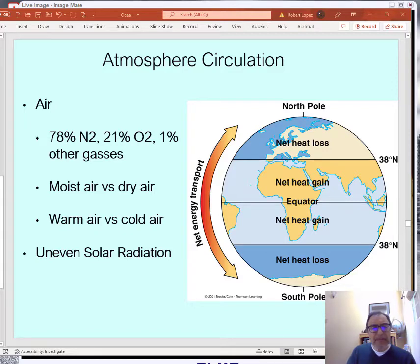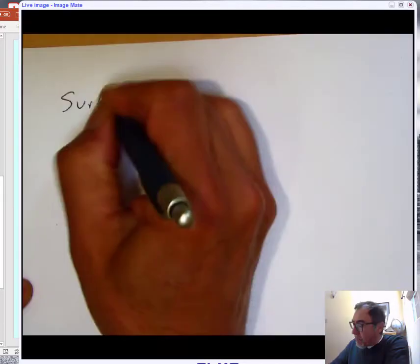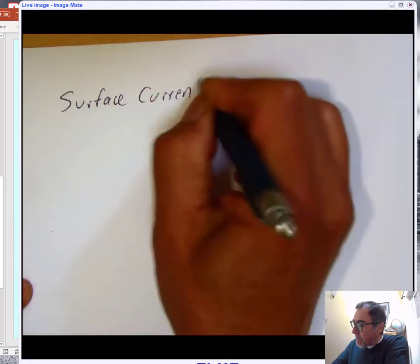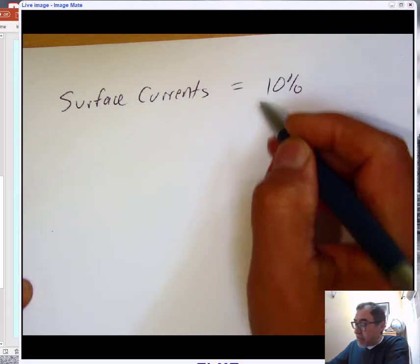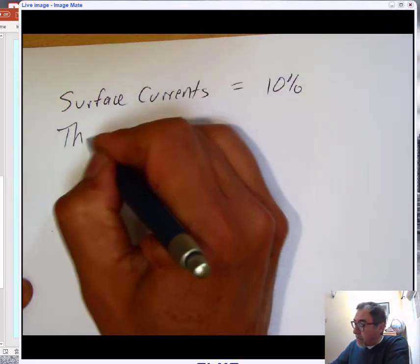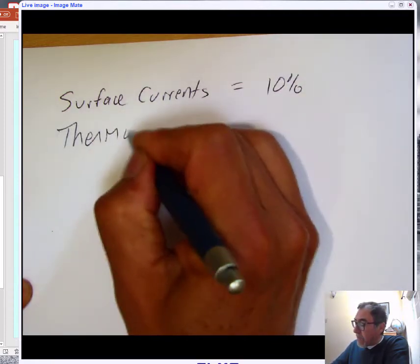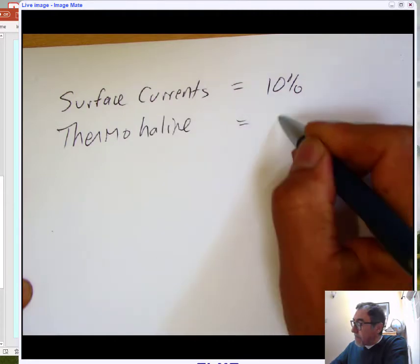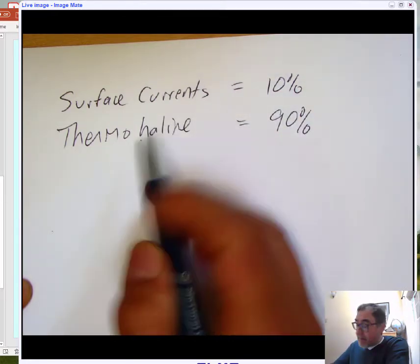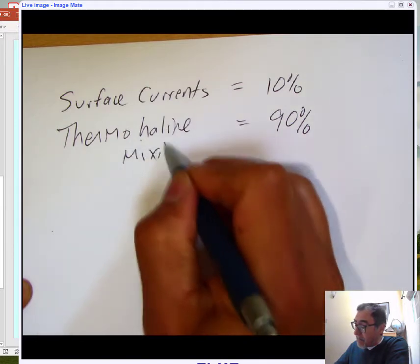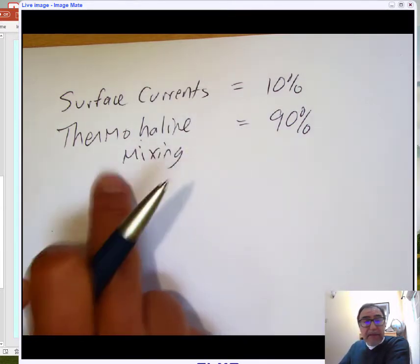There's going to be basically two types of currents. These surface currents amount to about maybe 10% of ocean circulation. And then there's another series called the thermohaline currents, and these are about 90%. So most of the ocean turning or ocean mixing is this thermohaline.